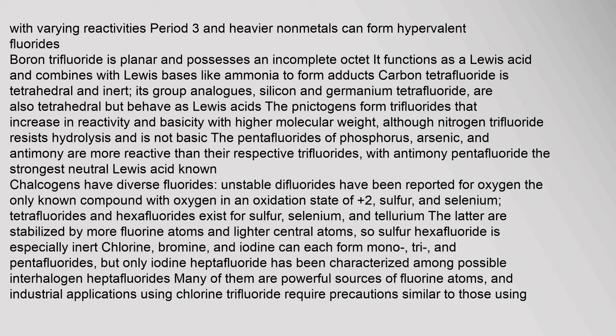Chalcogens have diverse fluorides. Unstable difluorides have been reported for oxygen — the only known compound with oxygen in an oxidation state of +2 — as well as sulfur and selenium. Tetrafluorides and hexafluorides exist for sulfur, selenium, and tellurium. The latter are stabilized by more fluorine atoms and lighter central atoms, so sulfur hexafluoride is especially inert. Chlorine, bromine, and iodine can each form mono-, tri-, and pentafluorides, but only iodine heptafluoride has been characterized among possible interhalogen heptafluorides. Many of them are powerful sources of fluorine atoms.